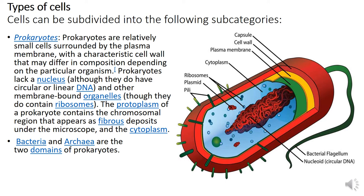Prokaryotic cells lack a nucleus. Prokaryotes are relatively small cells surrounded by a plasma membrane with a characteristic cell wall. The cell wall composition may differ depending on the particular organism. Prokaryotes lack a nucleus, although they do have circular or linear DNA.